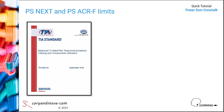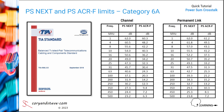Next, we have the limits for augmented category 6, or Cat6A, which is characterized to 500 megahertz versus 250 megahertz for Cat6. The limits shown here are the same as those seen previously for category 6 up to 250 megahertz, with additional values added to extend the characterization to 500 megahertz.